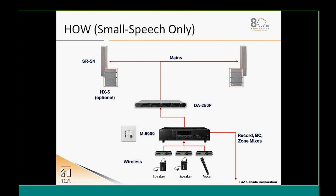For a smaller house of worship, a typical system might use SRS or HX5 speakers as main fronts powered by a four-channel amplifier, back to an M9000 series DSP with up to eight inputs and outputs with all processing, a keypad for local volume and source control, and wireless microphones. Be mindful of outputs — you may need an output to feed overflow zones, a computer, or a recording device.